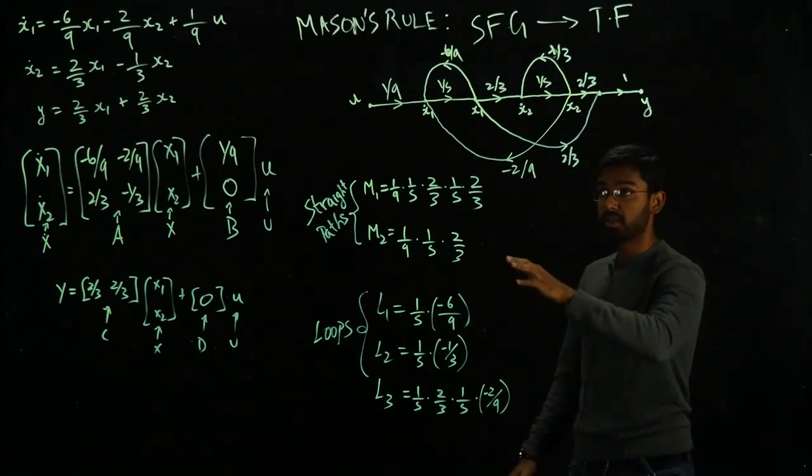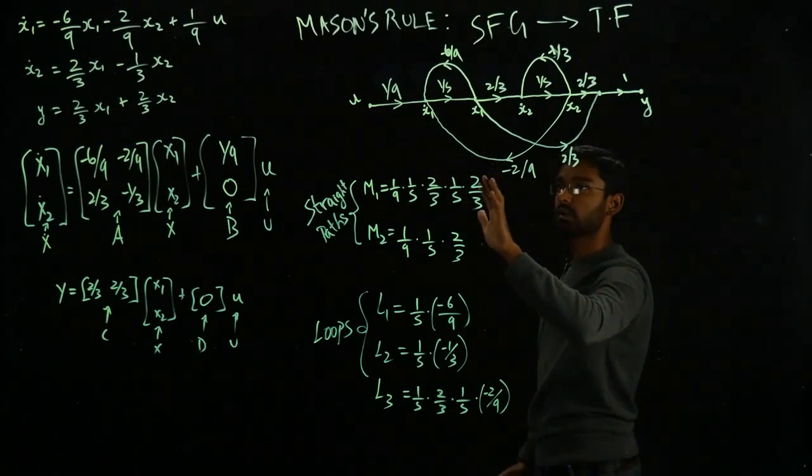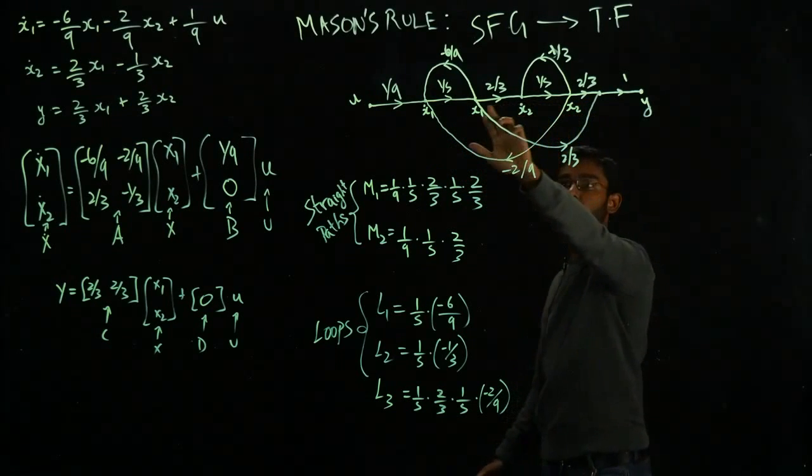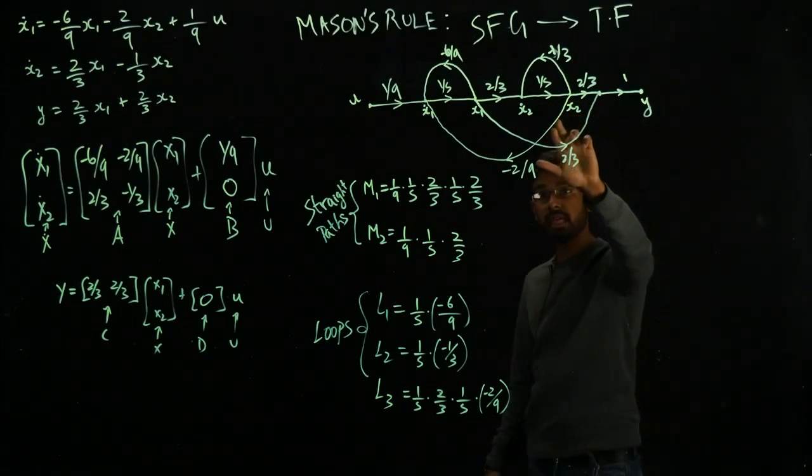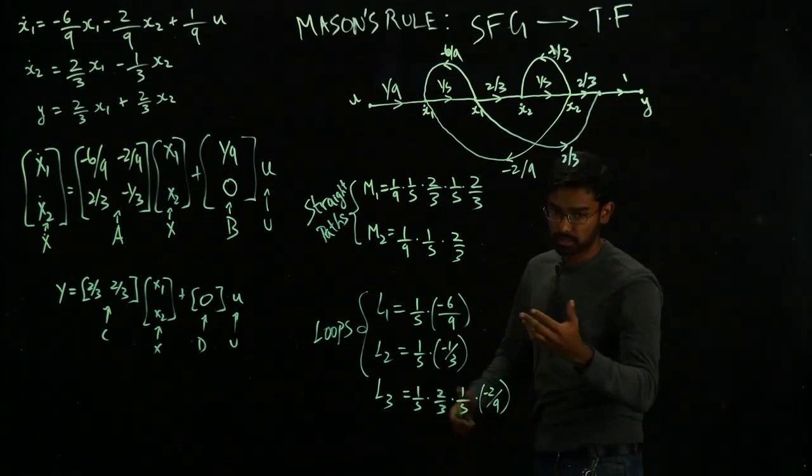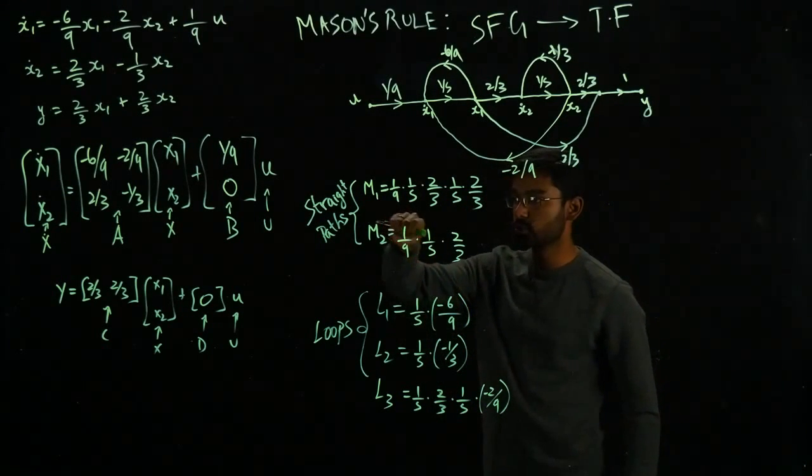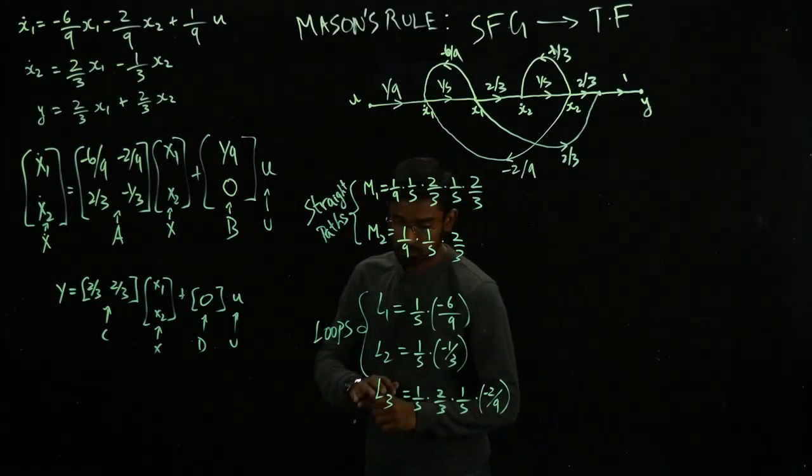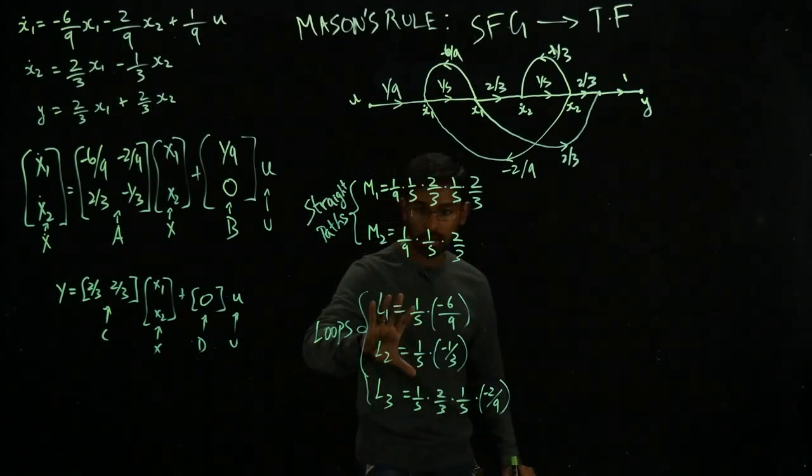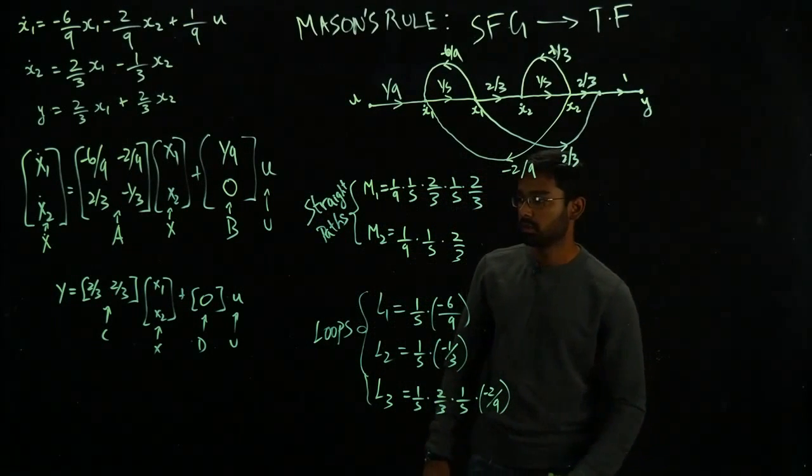What you have to remember is while considering loops, you have to start at a point, follow the signals through the graph and then be able to trace back to the same point, which is the definition of the loop. In this case, I have 3 loops, 2 forward paths. So these are quantities that I would need.